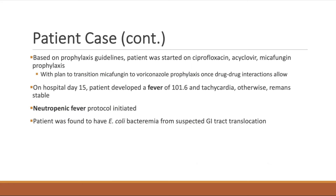Continuing with the patient case: based on prophylactic guidelines, this patient was started on ciprofloxacin, acyclovir, and micafungin prophylaxis. Micafungin is used initially because of a critical drug-drug interaction associated with 7+3. Once this drug-drug interaction clears, there is a plan to transition from micafungin to voriconazole. On hospital day 15, the patient develops a fever of 101.6°F with tachycardia but remains otherwise stable — neutropenic fever protocol is initiated.